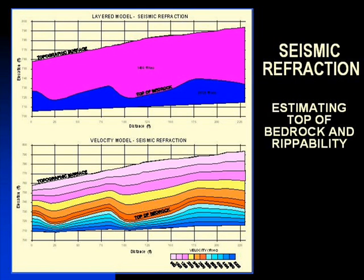Another common method is seismic refraction, which determines the approximate depth to bedrock and the ripability. Best results are obtained when the top of bedrock has an abrupt contact with nominal weathering, whereas less reliable data are recorded in areas containing a saprolitic or transitional zone from soil to bedrock.